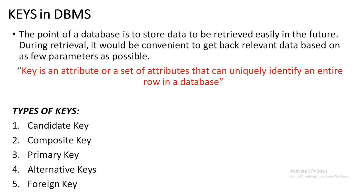A key is an attribute or set of attributes that can uniquely identify an entire row in the database. For example, if you consider a table with 10 records and you want to retrieve a row with a unique value, you should have a key there — that means one or multiple columns acting as a key value to uniquely identify your records.